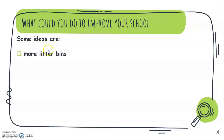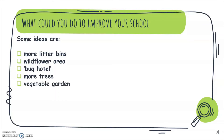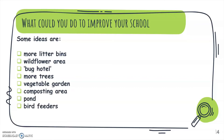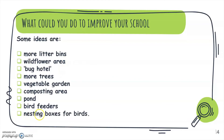Some ideas are: more litter bins, a wildflower area, a bug hotel, more trees, a vegetable garden, a composting area, a pond, bird feeders, and nesting boxes for birds. These are some ideas to improve your school and protect the environment.